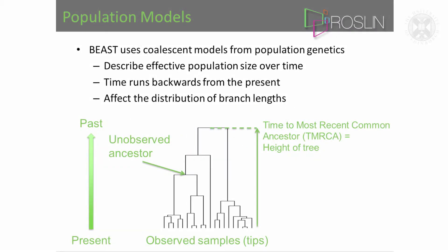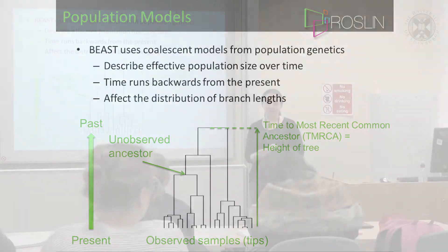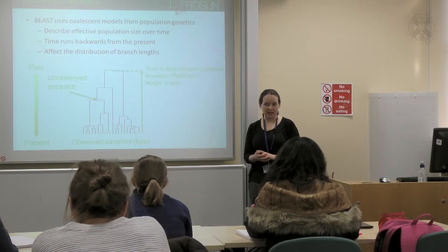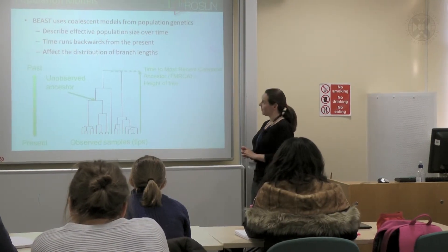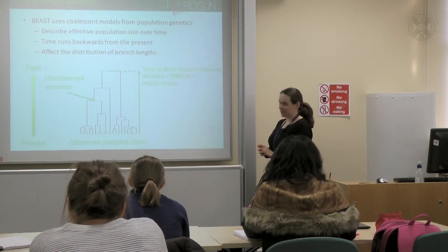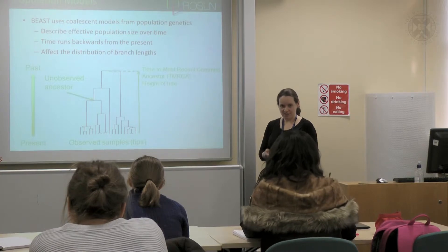The population models are the coalescent models from population genetics. What they do is describe a quantity called the effective population size and how that changes over time. This is from population genetics, so things work a bit differently there.